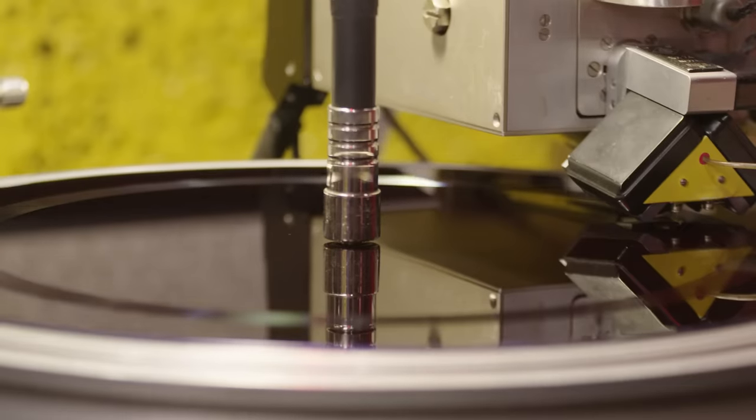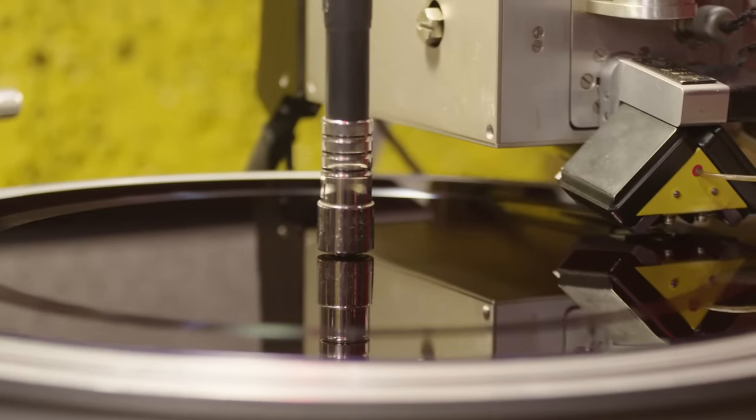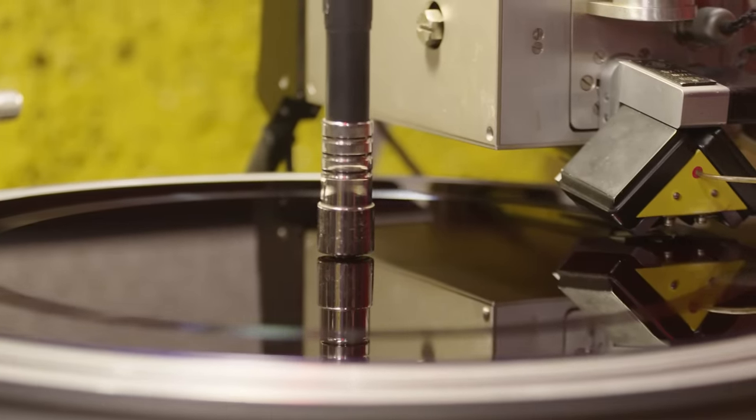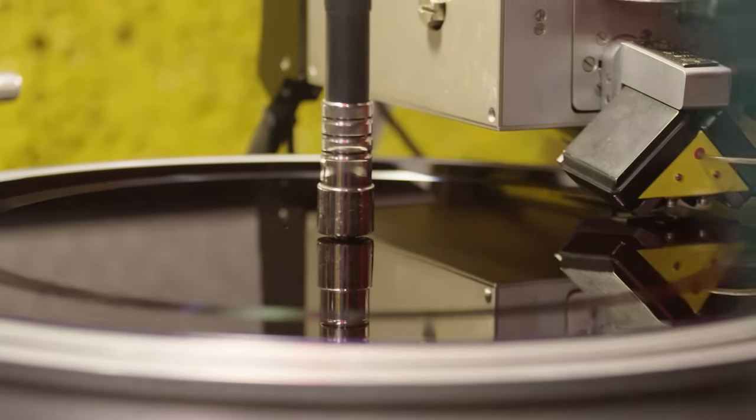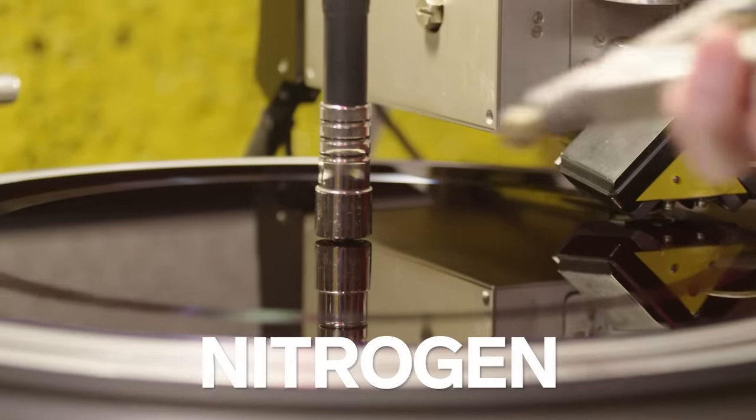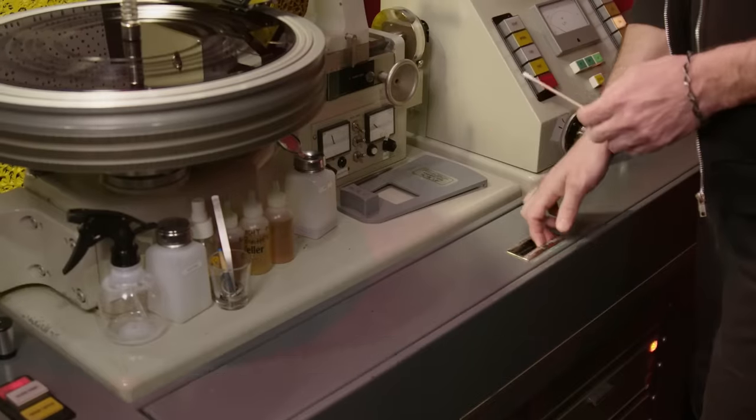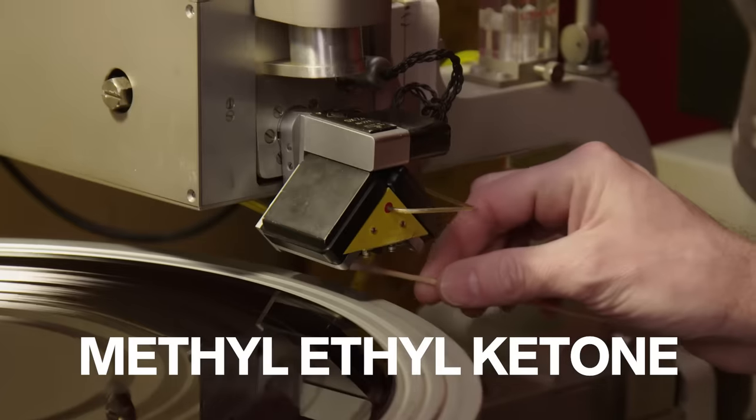And because the lacquer is delicate, it's affected by heat, humidity, temperature, cat hair, greasy chicken fingers. So you can't blow on it to clean it, which is why we have the nitrogen. We need to make sure the lacquer stays clean during the cutting. We use nitrogen to clean the lacquer, and we use methyl ethyl ketone to keep the stylus clean.